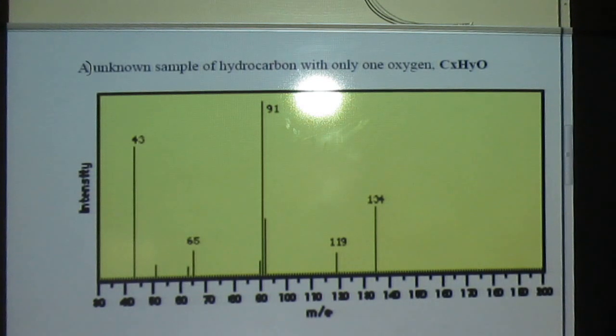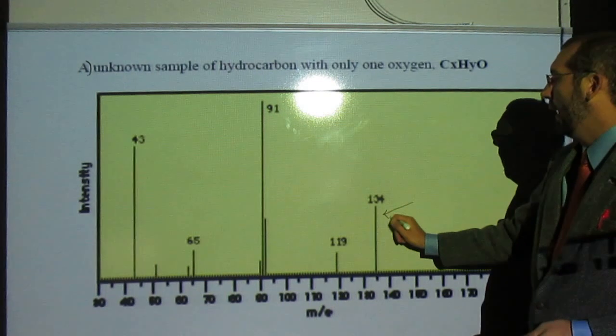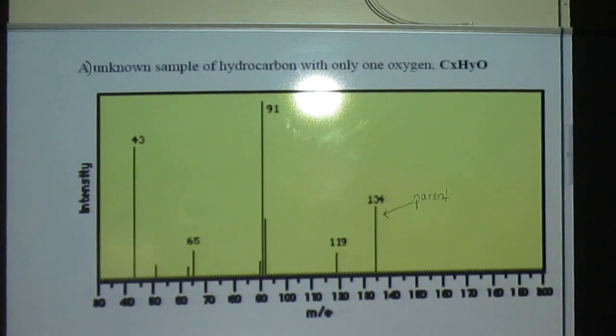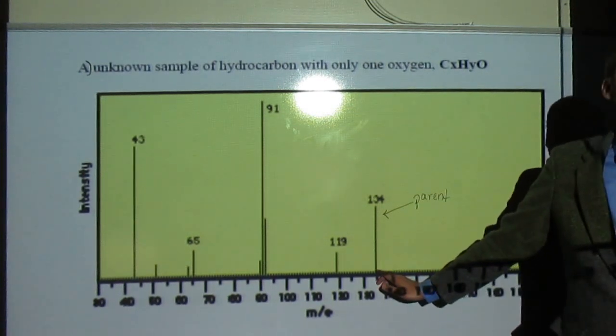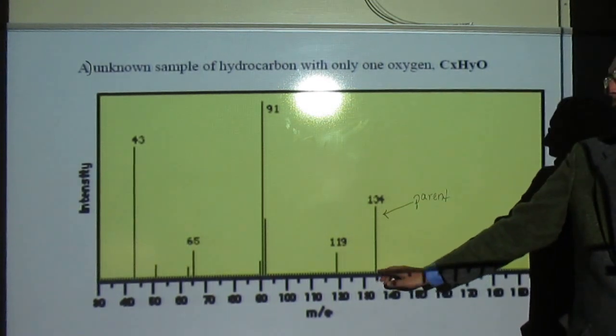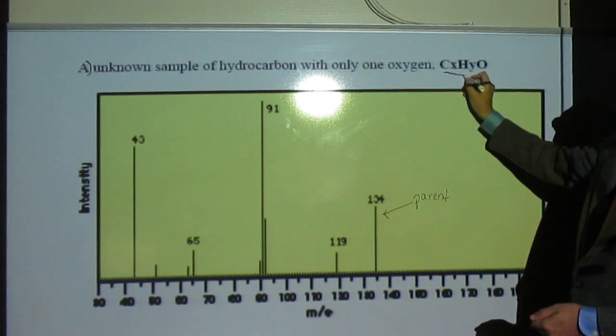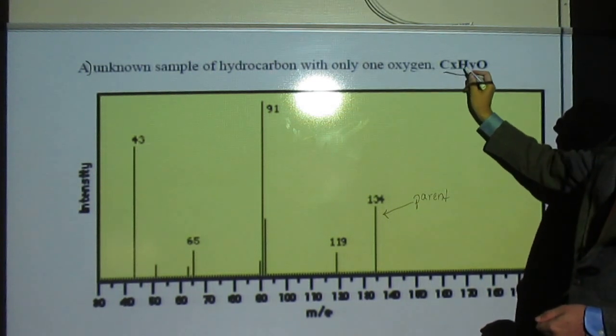Where's the parent ion? 134. How do you know it's that one and not any of the other peaks? Yeah, so the highest mass. Oftentimes there's a tiny little peak right after 134 or right after this parent ion. That's the M+1 peak. Don't worry about it. That's because every once in a while there's a carbon-13 in one of the molecules that it's looking at. The other thing we notice here, that the molecular formula they give us, or at least part of it, C, H, and O.